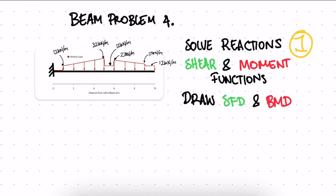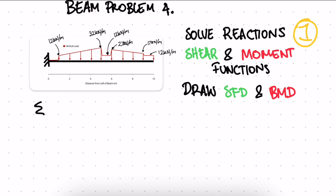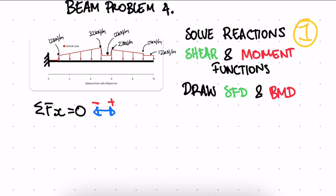The first step is to solve our reactions by writing equilibrium equations. For the sum of forces in the x-direction equal to zero — taking backwards as negative and forwards as positive — we can see straight away there are no forces acting in the horizontal direction. All forces act in the vertical direction, so our reaction Ax is equal to zero.